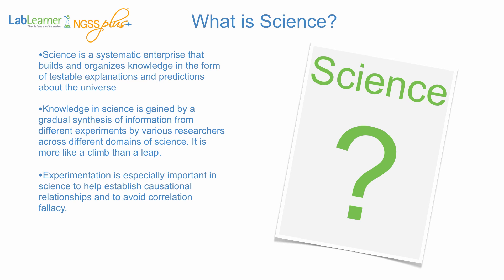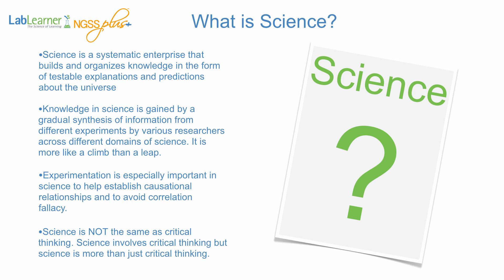Science involves experimentation, and this experimentation is especially important in science to help establish causational relationships and to avoid correlation fallacy. Perhaps this is the most important point: science is experimentation. Science is not the same as critical thinking — it uses critical thinking, but it is more than that. It involves experimentation as well as the synthesis of specific scientific information.